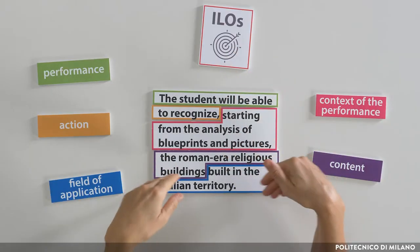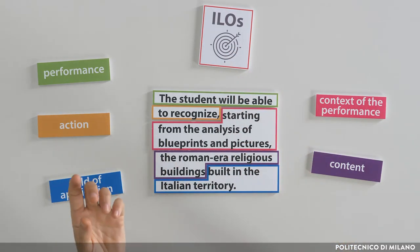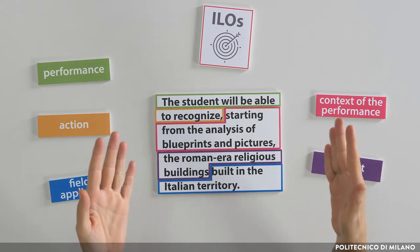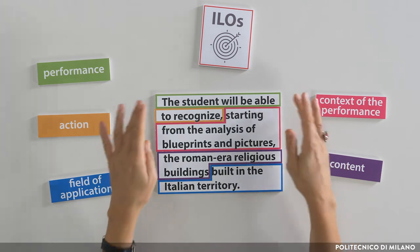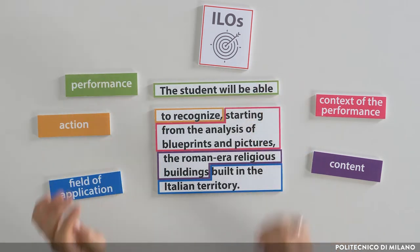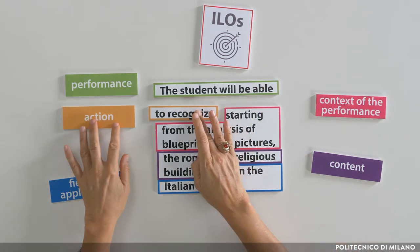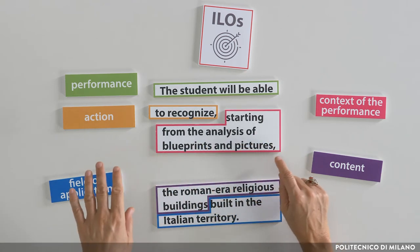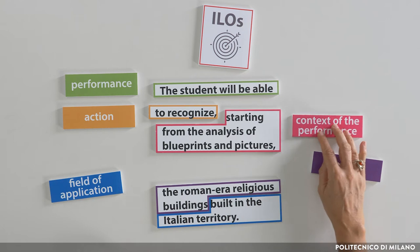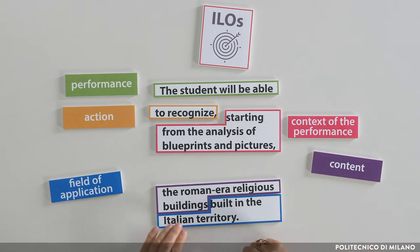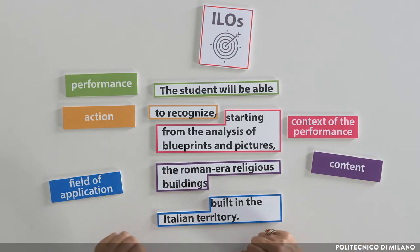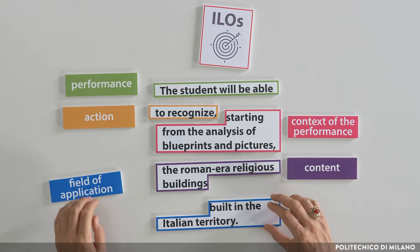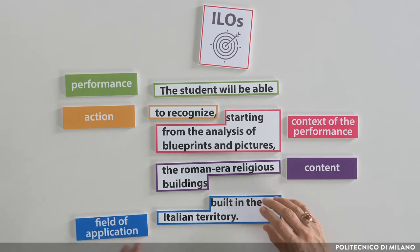Here we have an example of an intended learning outcome. In this case: the student will be able to [performance] — to recognize [action] — starting from the analysis of blueprints and pictures [context of the performance] — the Roman era religious buildings [content] — built in the Italian territory [field of application].